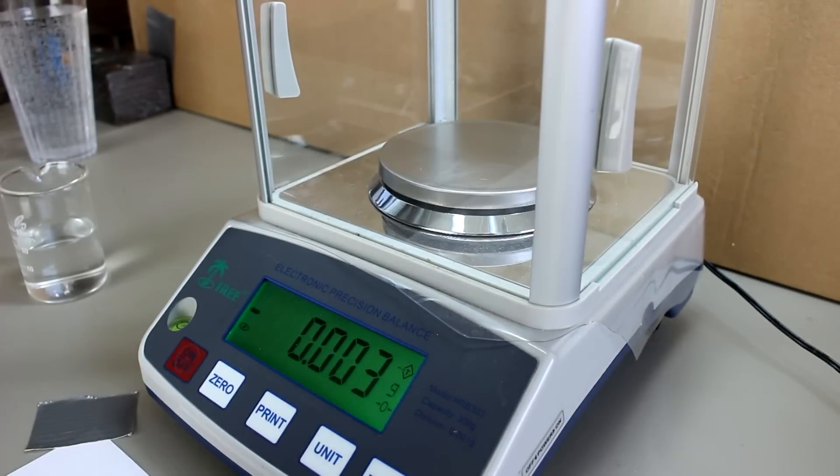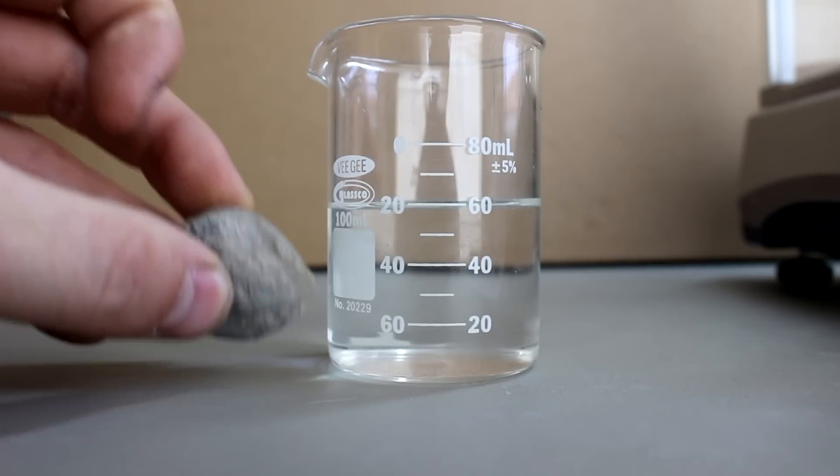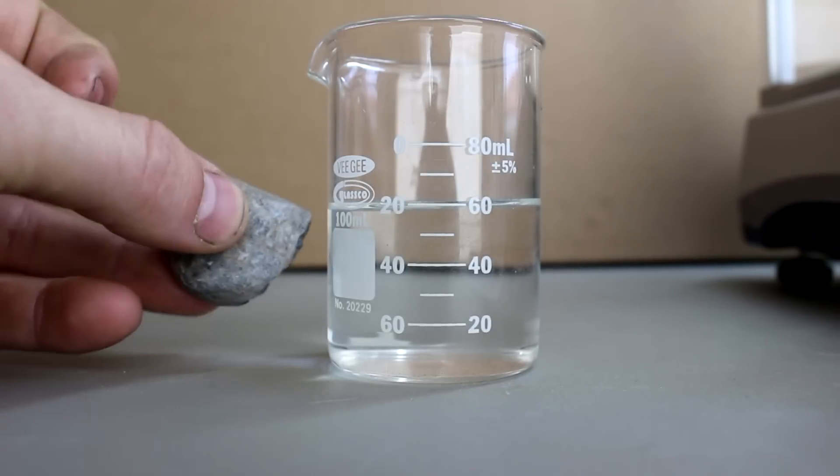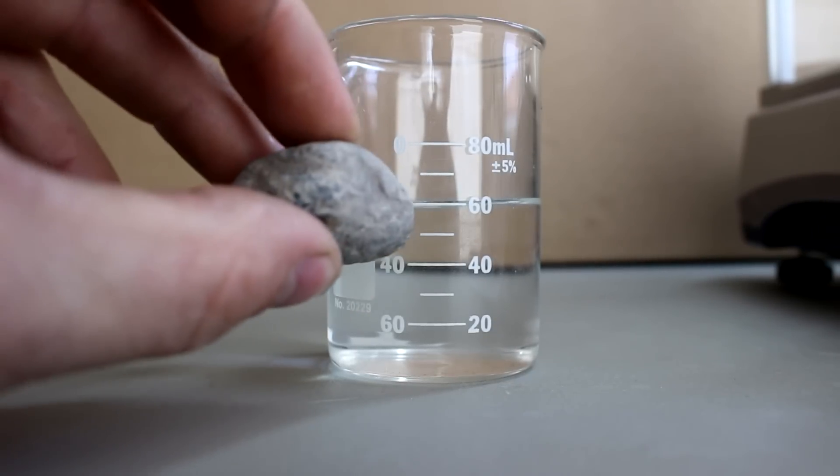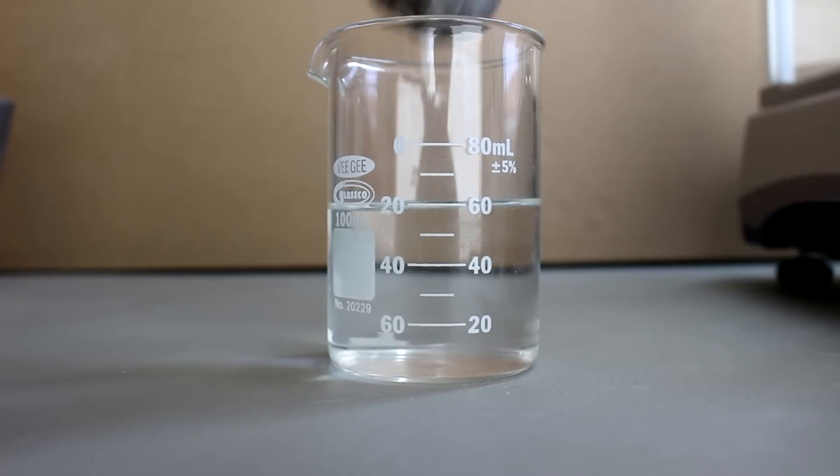Grams is not a unit of weight. Now to get its volume we're going to take a graduated cylinder, or in this case a beaker, fill it up to a known level with water, put the rock in.